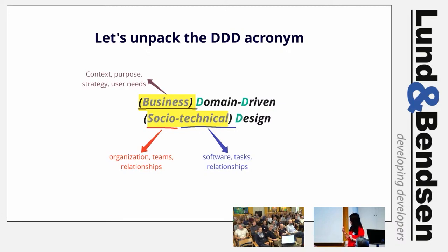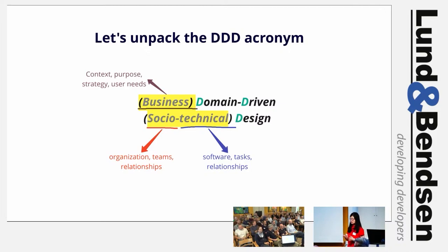Since its birth, domain-driven design has had a clear software focus. In 2003, 20 years ago when the Big Blue Book was written, the software landscape was way simpler than today. There was no microservices, no cloud, no AI, no ML, no Docker, no Kubernetes. Good software design was proudly practiced in monolithic systems.